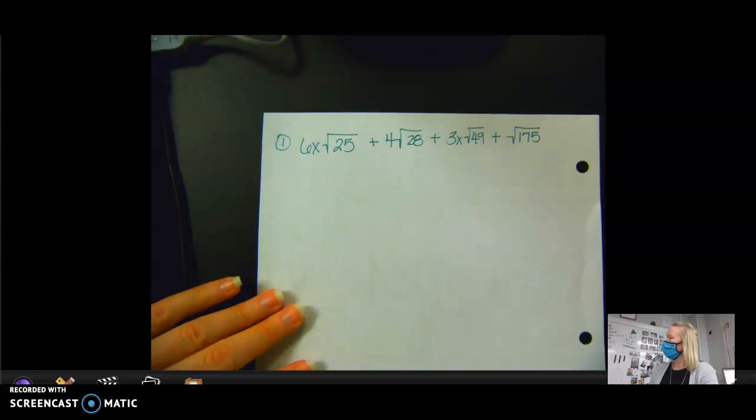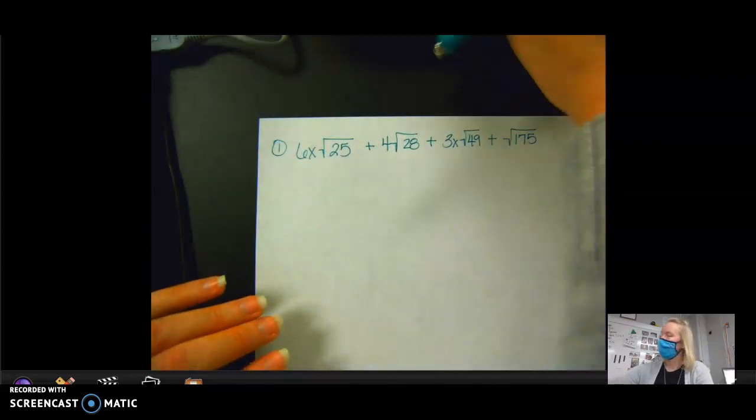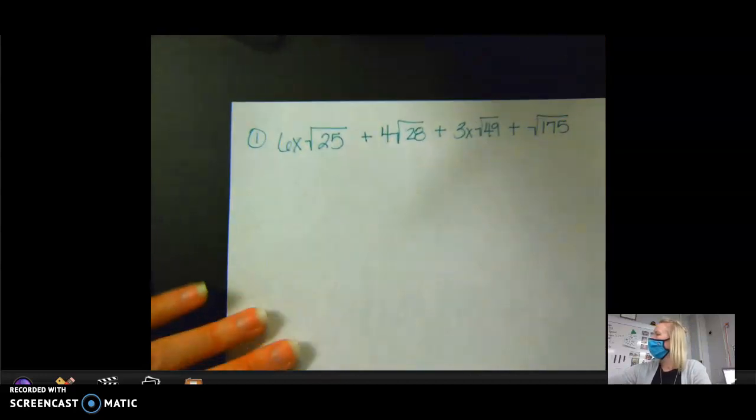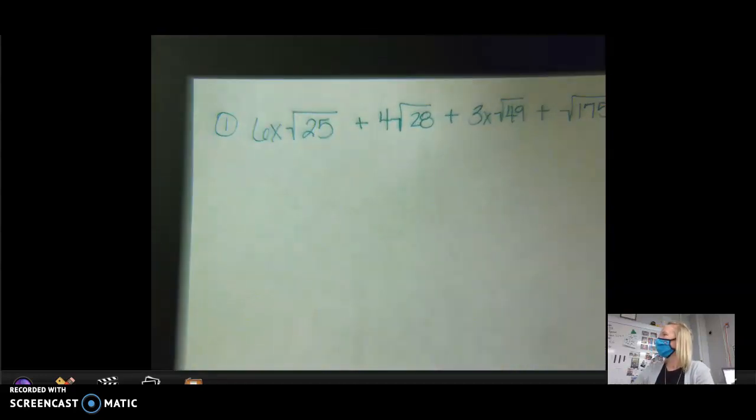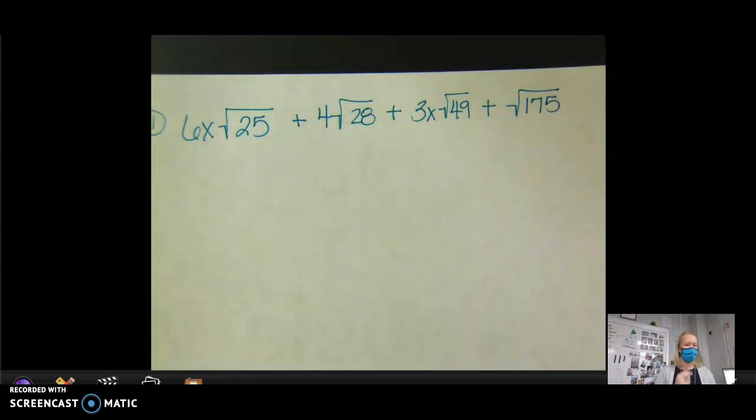I'm trying to move it to get it better. 6x square root of 25 plus 4 square root of 28 plus 3 square root of 49 plus the square root of 175. Can you see it there? Yeah, that's very important. Did I say something different?